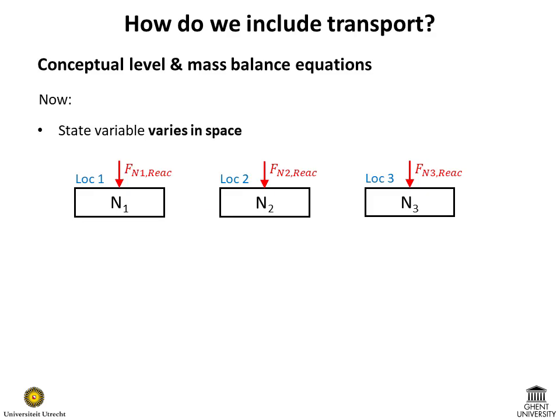To include transport, we no longer assume that the state variable n is homogeneously distributed. Instead, we consider that it varies in space. For example, we consider that n has different values in spatial locations 1, 2 and 3. These spatial locations can represent, for example, different segments of a river or different layers of a water column.